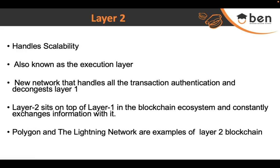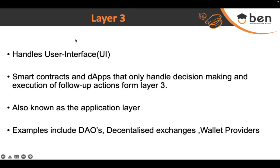Finally, we have Layer 3, the application layer, which takes care of the user interface. All the smart contracts and dApps that we hear about are formed in this layer. Major examples include DAOs, decentralized exchanges like Uniswap, and wallet providers like Binance. Basically, anything that interacts directly with people and provides an interface is handled here. That is it about the layer architecture in blockchain — see you in the next lesson.